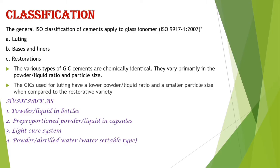GIC is available in several forms: as powder and liquid in separate bottles, as pre-proportioned powder and liquid in capsule form, as a light-cure system, and as a water-settable type where distilled water is used with the powder.